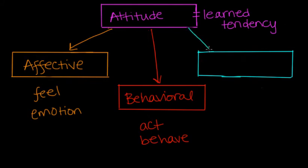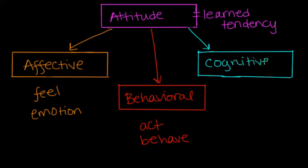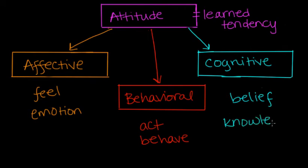And the last component is called the cognitive component. In the cognitive component, we form thoughts, we form beliefs, or we have some sort of knowledge about a subject or an object or a topic that's going to influence and shape our attitude. So an example here is saying, I believe spiders are dangerous. We have a belief that they are dangerous, and that's going to form our attitude.